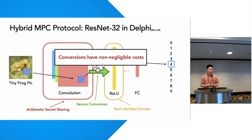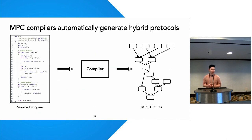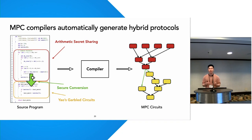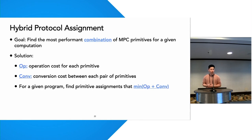In order to effectively optimize a hybrid MPC protocol, a researcher needs a strong understanding of both the operation and conversion cost of each MPC primitive. This leads us to our first pain point: hand-tuning these hybrid MPC protocols is both a manual and labor-intensive process. In recent work, researchers have proposed hybrid MPC compilers that can automatically generate optimized hybrid MPC protocols. These compilers transform high-level programs written in languages like C into low-level MPC circuits while optimizing protocol assignments for better performance. To formalize this hybrid protocol assignment problem, the goal is to find the most performant combination of MPC primitives for a given computation, minimizing the total cost of the entire protocol.